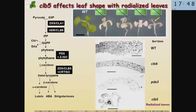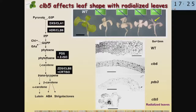In spite of the fact that all these other carotenoid mutants do not contain or accumulate carotenoids, they have a normal leaf with a flat lamina. Our mutant CLB5 had a radialized leaf. This demonstrates that in spite of all these mutants affecting carotenoids, only CLB5 affects the morphology of the leaf.